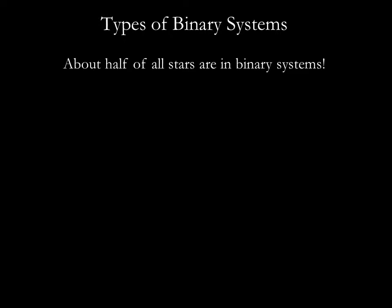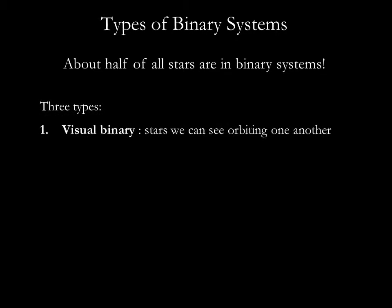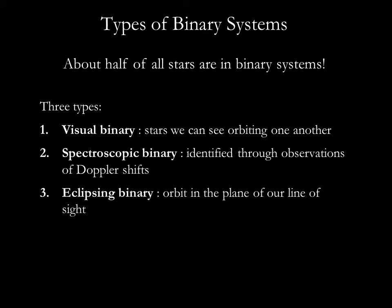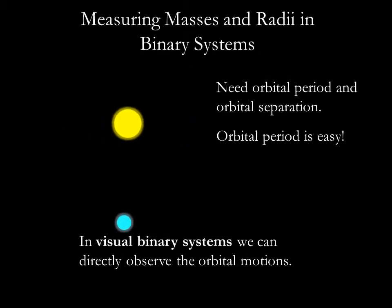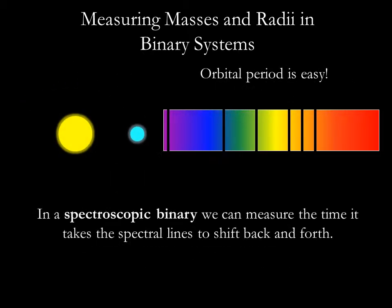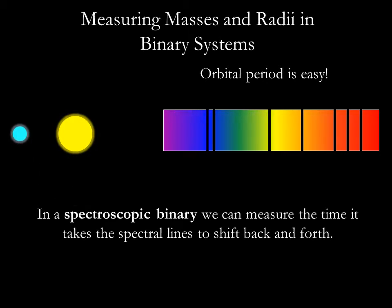About half of the stars in our galaxy are in binary systems. Binary star systems fall into three general classes. A visual binary is a pair of stars that we can see with a telescope orbiting one another. A spectroscopic binary is identified through observations of the Doppler effect in its spectral lines. An eclipsing binary is a pair of stars that orbit in the plane of our line of sight. Measuring orbital period is fairly easy — in a visual binary we simply observe how long each orbit takes, and in a spectroscopic binary we can measure the time it takes the spectral lines to shift from blue to red as a star moves toward and away from us.